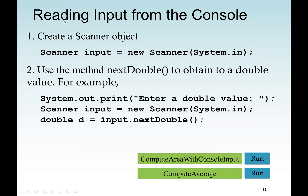With the assignment operator, the radius value will always be the same unless we change it. Another option is to use the Scanner class, which is in the package called java.util. The Scanner class, when we use System.in as the argument, allows us to get input from the keyboard, meaning we type the input when we run the program. To do that, we need to create a Scanner object.